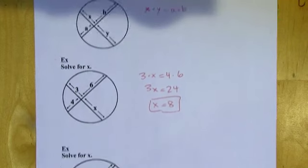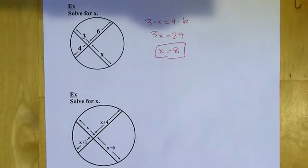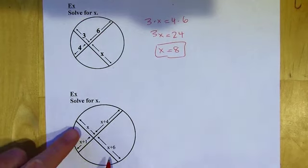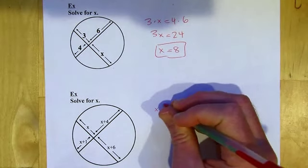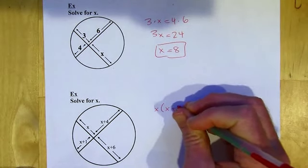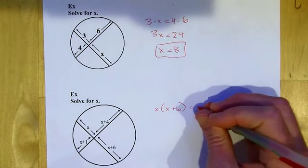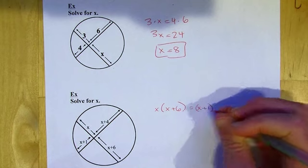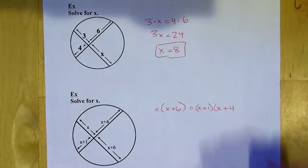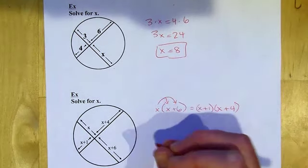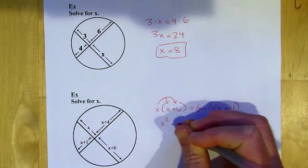Let's try a trickier one. We've got the same kind of scenario but more going on with the expressions. I'm going to take X times the quantity X plus 6 equal to X plus 1 times X plus 4. Distributing the X gives X squared plus 6X on the left side.